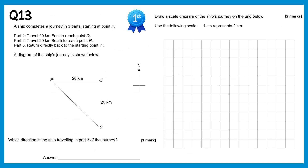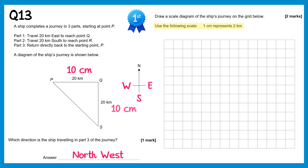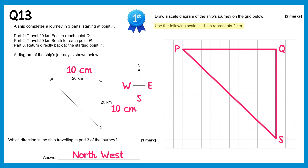A ship travels in three parts: P to Q, Q to S, and S to P. For part 3 (S to P), looking at the compass points, the direction is between North and West, so it's North-West. For the scale diagram using 1cm = 2km: P to Q is 20km = 10cm, and likewise Q to S is 10cm. We draw two lines of 10cm and connect them to complete the P–Q–S diagram.